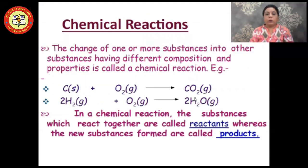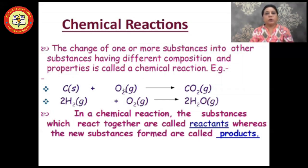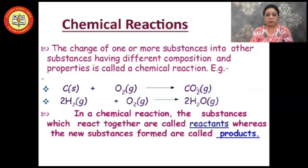What is a chemical reaction? The change of one or more substances into other substances having different composition and properties is called a chemical reaction. For example, carbon reacts with oxygen to form carbon dioxide gas. The properties of carbon and oxygen are different, and the compound formed — carbon dioxide — also has properties different from carbon and oxygen. Another reaction: hydrogen reacts with oxygen to form H₂O, that is water.